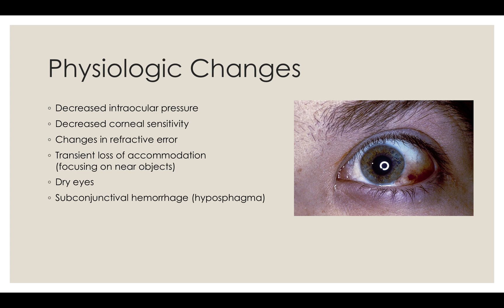The cornea retains water during pregnancy, causing a decrease in corneal sensitivity and an increase in corneal thickness and curvature. These changes produce temporary alterations in refraction, predominantly in late pregnancy, and are a relative contraindication to surgery seeking to repair corneal refractive error. The lens also thickens, contributing to refractive error and resulting in transient reduction in accommodation. Pregnant women are well advised to postpone obtaining prescriptions for new glasses or contacts.